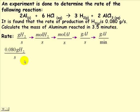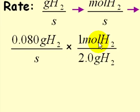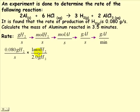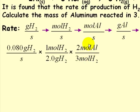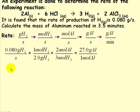Starting with 0.08 grams of hydrogen per second, we convert to moles of hydrogen per second by multiplying by one mole of hydrogen over the molar mass, 2 grams. Once we have moles of hydrogen, we find moles of aluminum using the mole ratio: two moles of aluminum per three moles of hydrogen. Then we convert moles of aluminum to grams of aluminum using the molar mass of aluminum, 27 grams per mole.